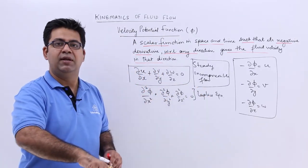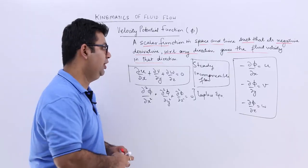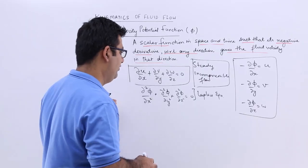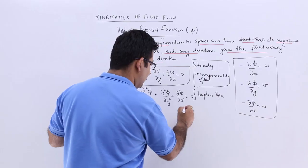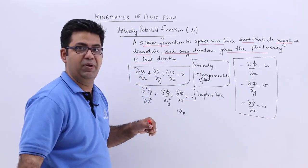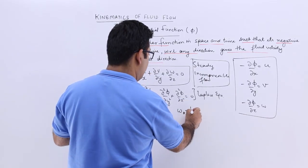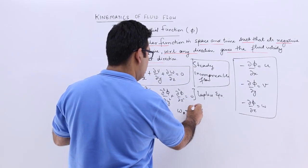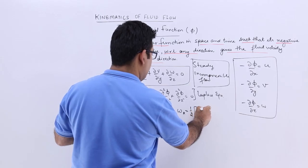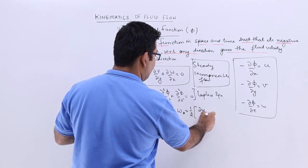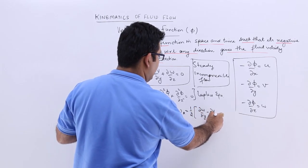Now let's talk about the rotational velocity of the flow. The rotational velocity in the x direction, omega x, is given by one-half times the quantity: partial w over partial y minus partial v over partial z.